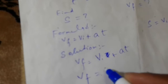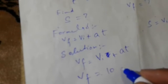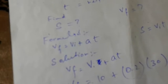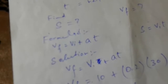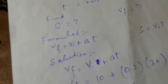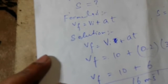Now putting in the values: initial velocity is 10 meters per second, acceleration is 0.2 meters per second squared, and time is 30 seconds. So vf equals 10 plus 0.2 times 30, which gives 6, making the final velocity 16 meters per second.